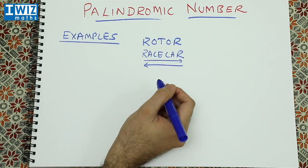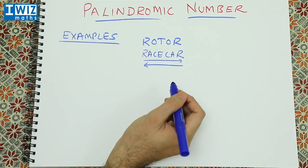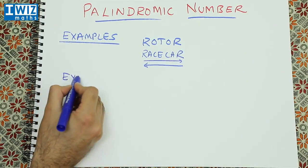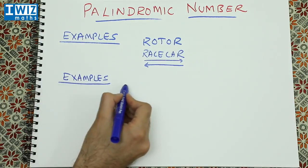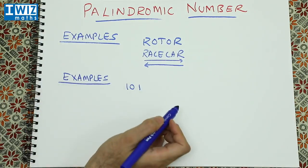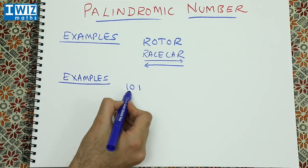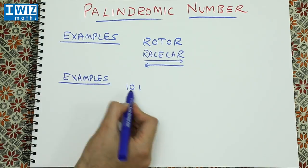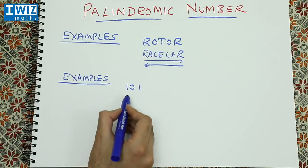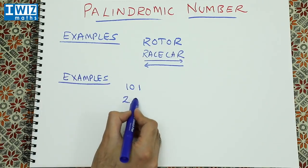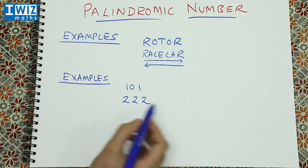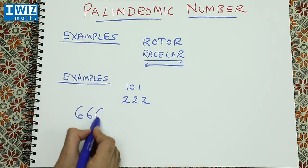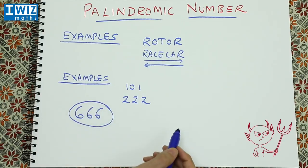In a similar way, a palindromic number remains the same when the digits are reversed. Examples of that would be 101, which is 101 both ways, and 222. So it's reasonably clear that 666 is in fact a palindromic number.